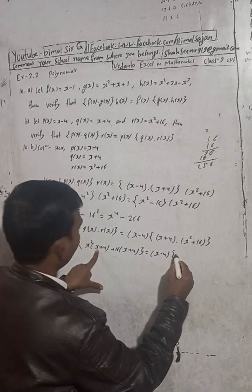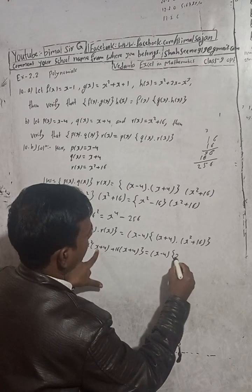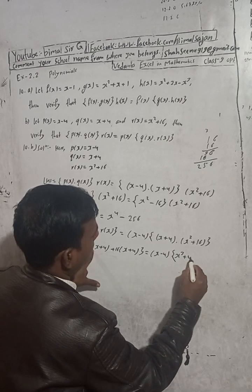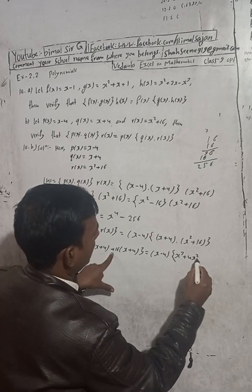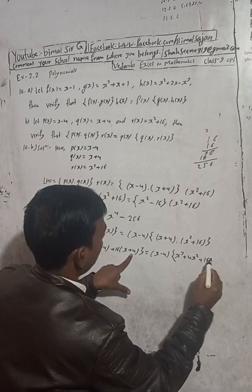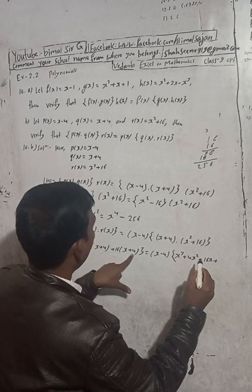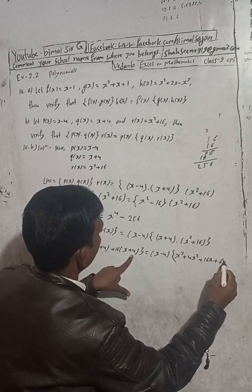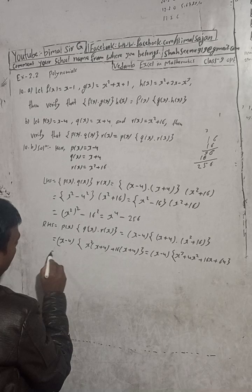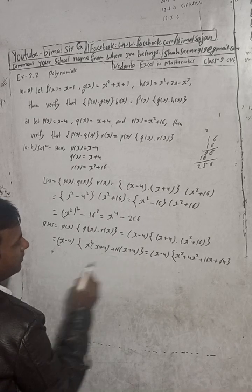So x square times x: x cube. Plus 4, 4x square, 4x square. Plus 16 into x. Plus 4, 16 plus 64. Is equal to x minus 4.